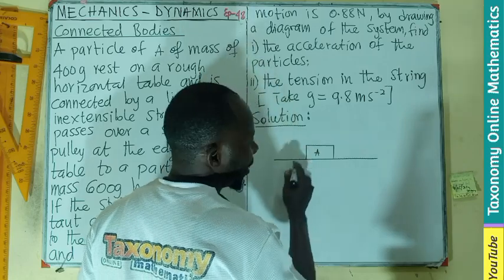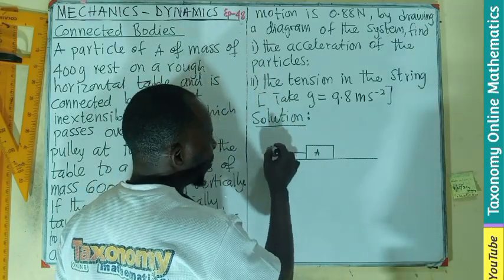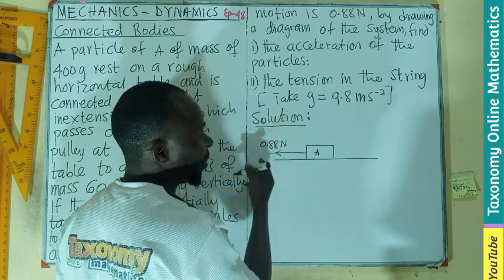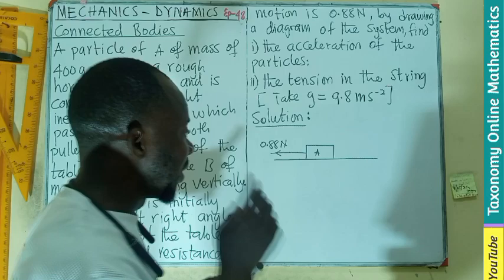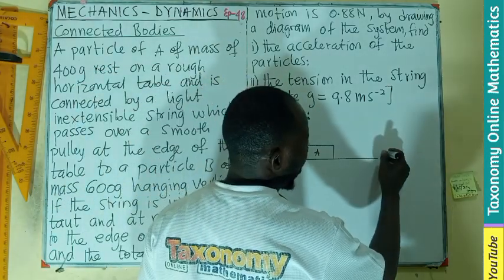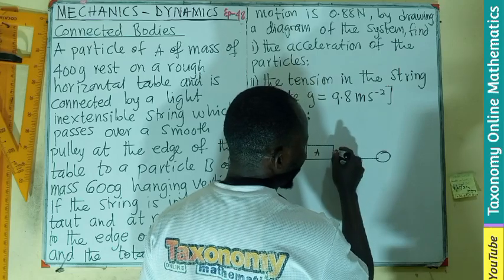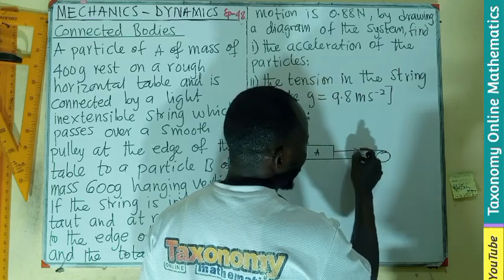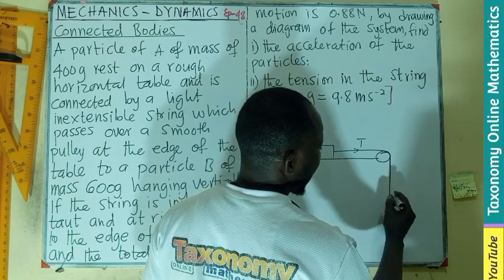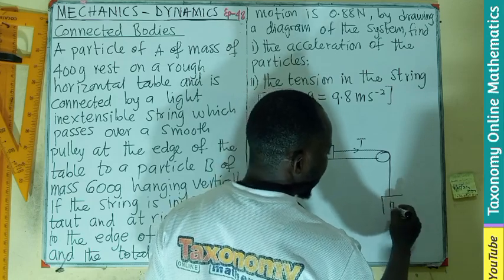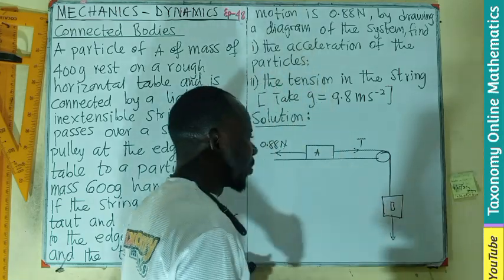By diagram, let's see. We have this rough horizontal surface. We are having a body, which is the first body, affected by a resistance of 0.88 newtons. Resistance simply means the frictional force. Then we are having a pulley, so the pulley is at the end of it.